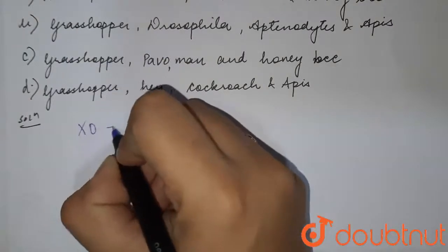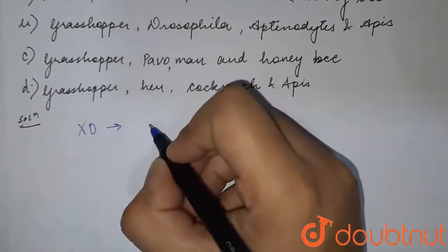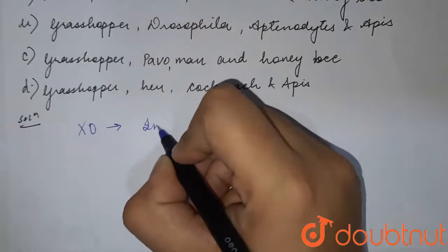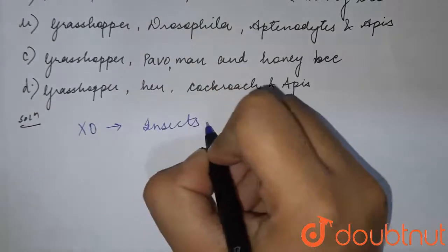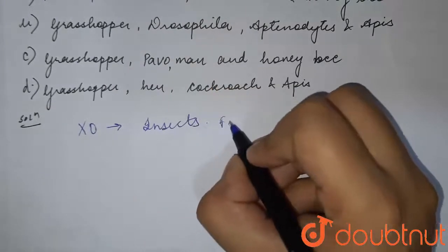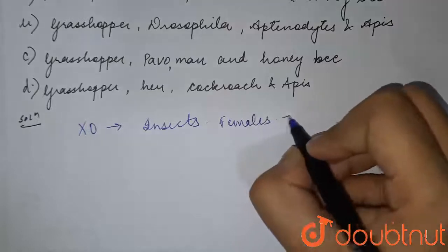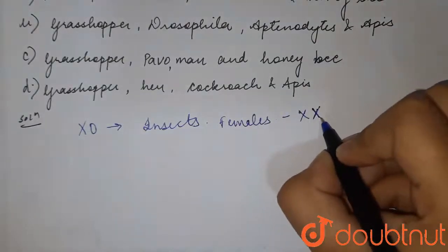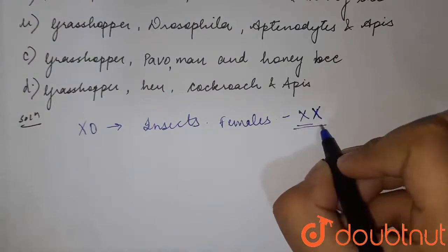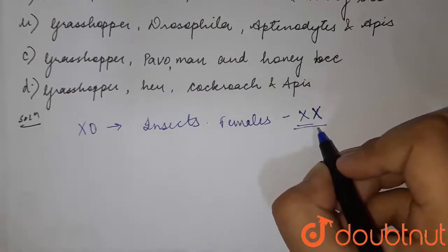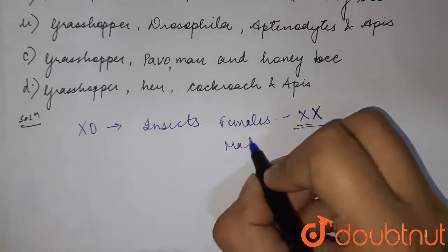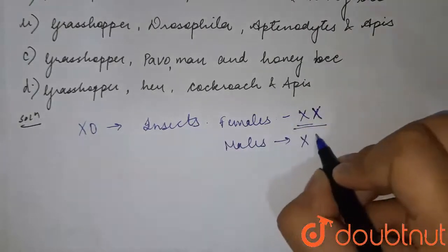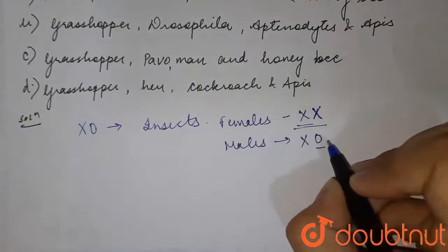In the XO type of sex determination, it is generally seen in insect species. The females in this species have the chromosome structure for sex determination as XX. Instead of carrying a Y chromosome, the males have XO because they are carrying only one X chromosome.